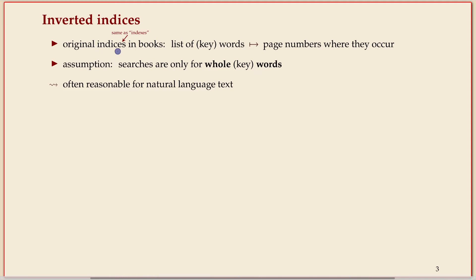It's something you find in books, so an inverted index is like the index in a book where you have a list of keywords and it shows you where they occur in a book. And the same can be done in a sense for a whole text. So this often works well for natural language text. The big assumption that's behind this is that we only ever search for given keywords.